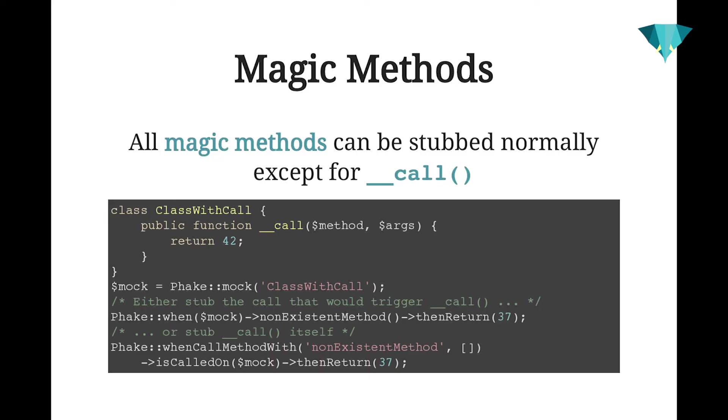You can't stub the __call magic method because Fake mock objects use __call themselves for making all the mocking magic happen. If you want to stub __call, you can either stub the method that __call would trigger, or use a special notation to stub __call itself. You call whenCallMethodWith on Fake, passing the name of the method that doesn't actually exist, the arguments you want passed, the mock object you expect the method to be called on, and then specify the stub you want used. Aside from __call, pretty much any other method should be able to be stubbed as normal.